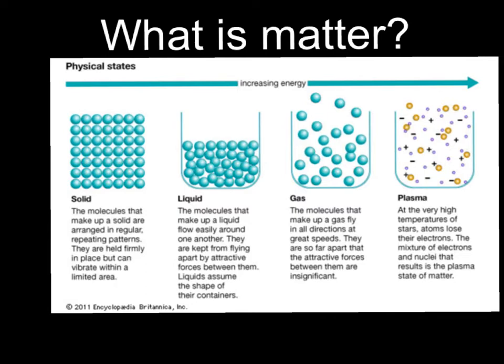Plasma is the fourth and final type of matter that we will be discussing — there is one more if you want to Google it. Plasma is a high-temperature gas, and at that temperature, electrons are both positive and negatively charged. The properties of plasma are so much different than the properties of a normal gas that it is considered its own state of matter.